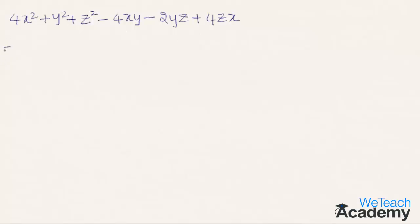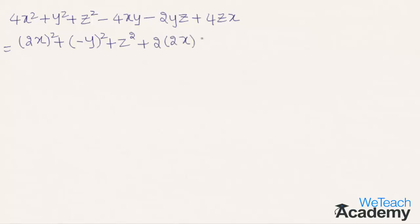The first term is 4x², with root 2x, so we write it as (2x)². We write y² as (−y)², and z² as z². Then −4xy can be written as 2 × 2x × (−y), and −2yz can be written as 2 × (−y) × z, and 4xz can be written as 2 × 2x × z.